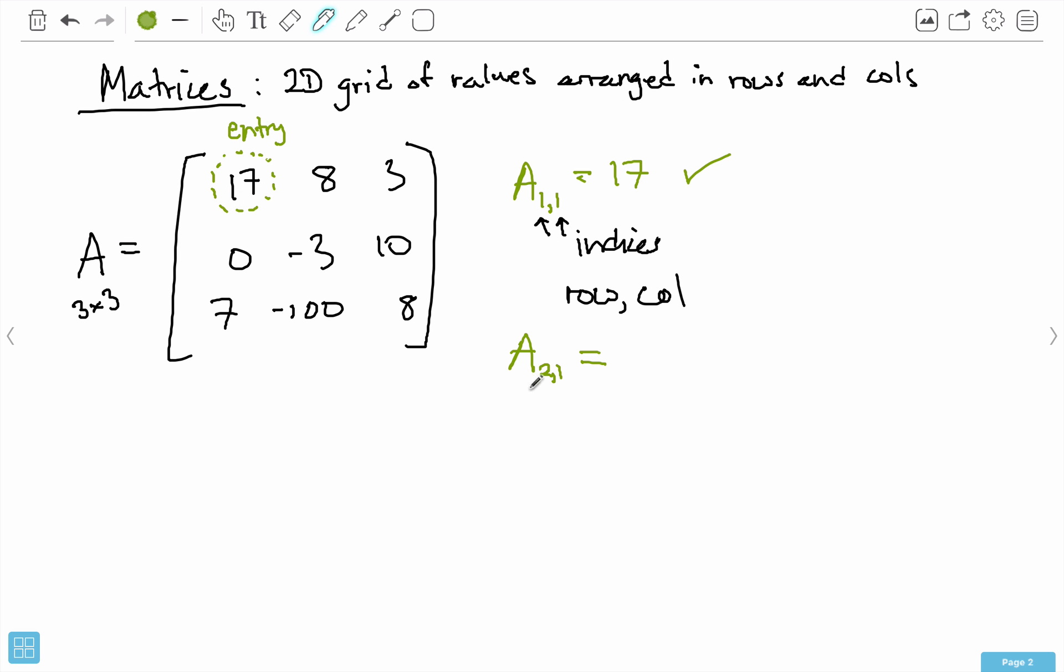Let's do this one more time. See if you can figure out which entry I'm talking about. Let's do something like 3,2, and pause the video. Okay, so when I say A sub 3,2, I'm talking about the third row, which is this last row, and the second column, which would be this value here, which is -100.